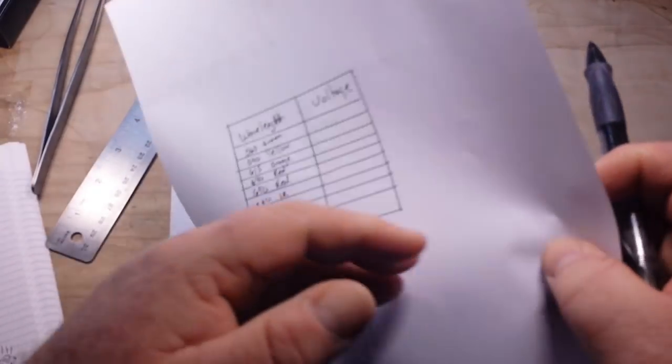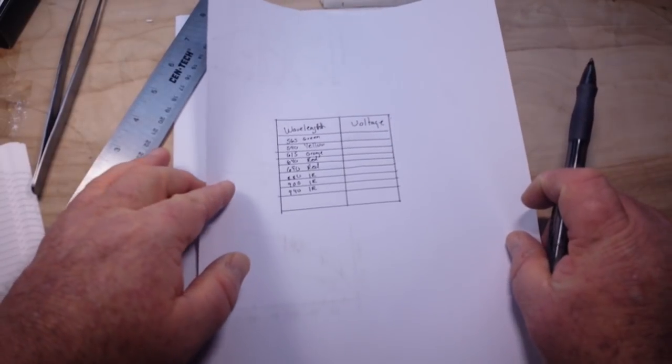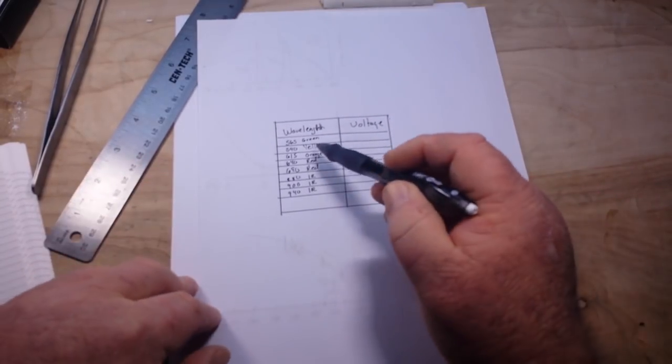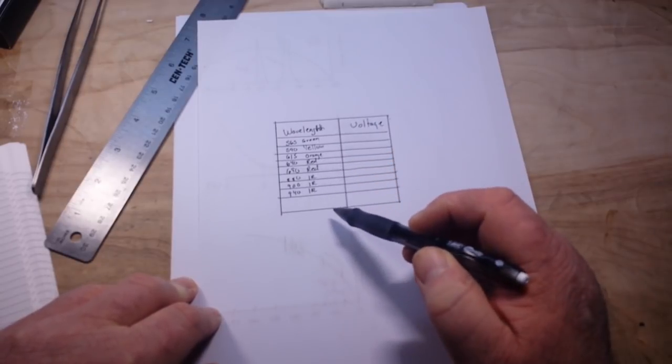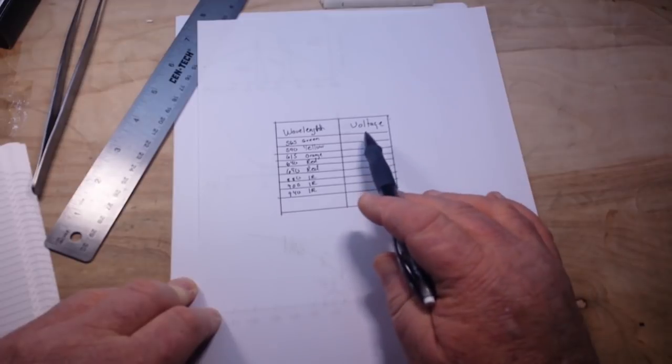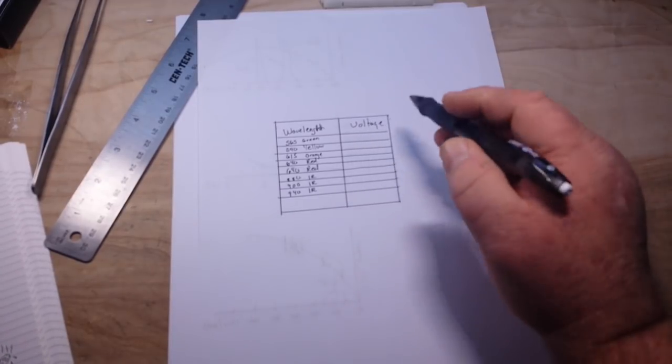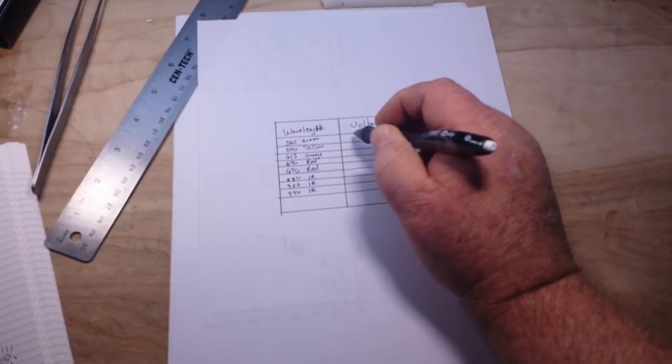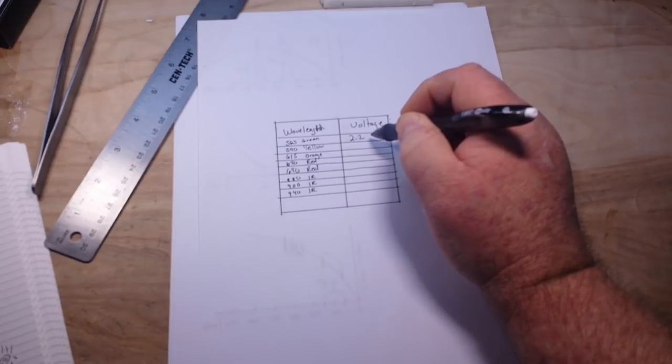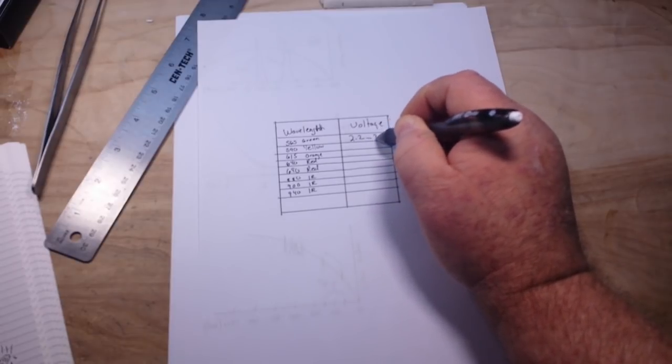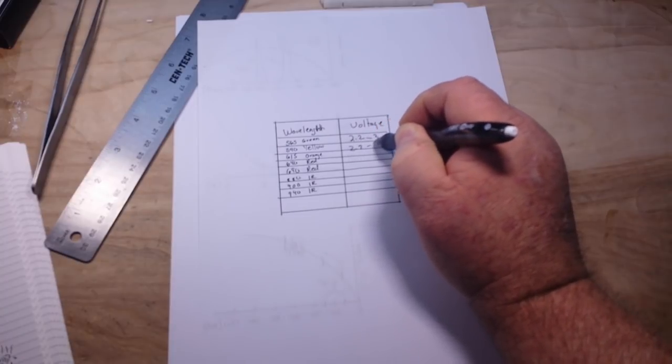And the final thing that I want to talk about is wavelength versus voltage. So I've written down some common wavelengths here: green, yellow, orange, a couple different reds, and some IR wavelengths. So what are the voltages at which they are going to begin to conduct? Well, the green is going to start around 2.2 volts, up to 3. The yellow, about the same, 2.2 to 3 volts.